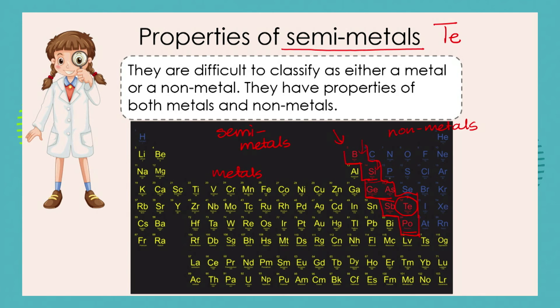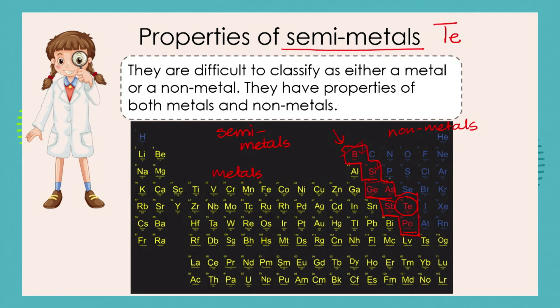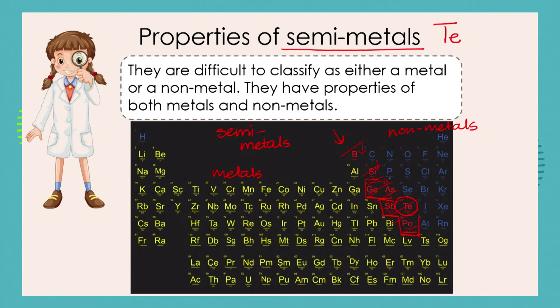We put all these semi-metals into the group that stands as a stairway between metals and non-metals. They are the stairway or step elements — semi-metals. They have some properties that are metallic and some that are non-metallic. We can't simply call them metals sometimes and non-metals other times, so we place all these very interesting elements into the group called the semi-metals.